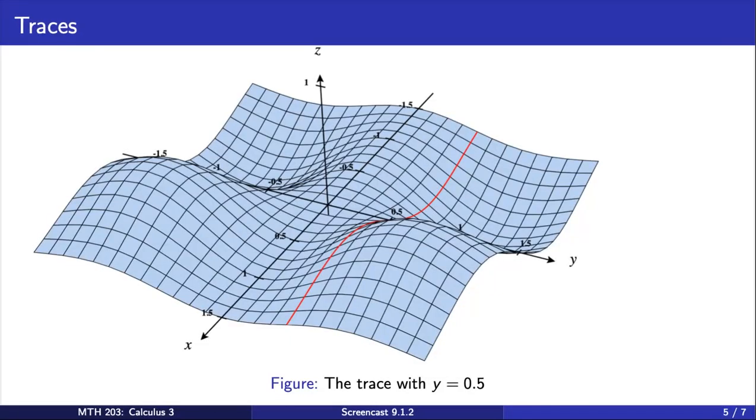And pictured here, the red curve shows the trace of f where y equals 0.5. Such a trace can help us better understand what happens to f as x changes and y is held constant at 0.5.